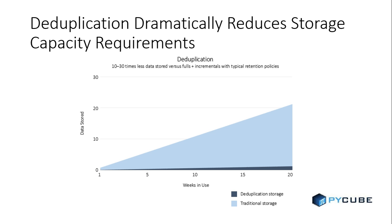Backup can be an inefficient process that involves repetitively moving mostly the same data again and again. Deduplication dramatically reduces the amount of redundancy in backup storage and is defined as the process of finding and eliminating duplication within sets of data. The deduplication process uses well-understood concepts such as cryptographic hashes and content address storage. Only unique segments are stored along with metadata needed to reconstitute the original data set.